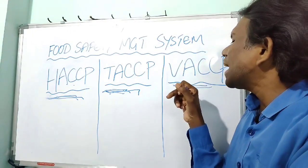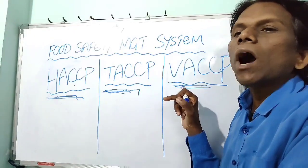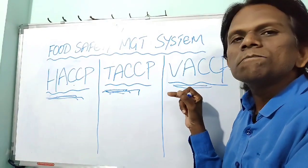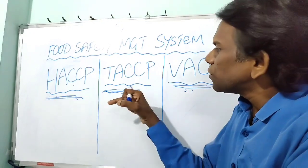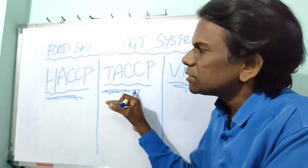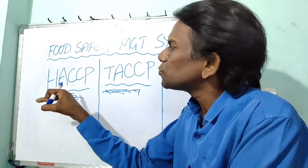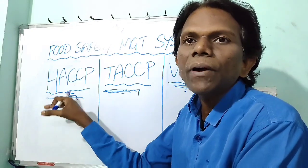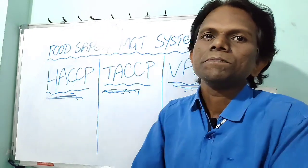The main purpose of intentional adulteration under VACCP is to gain economically. So VACCP will address how to prevent and control food frauds, how to control food defense, and how to produce safe and quality food to the end users.